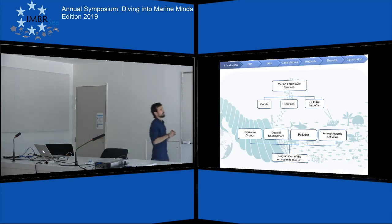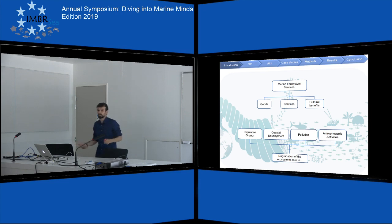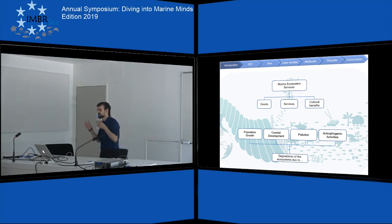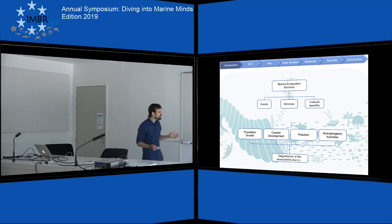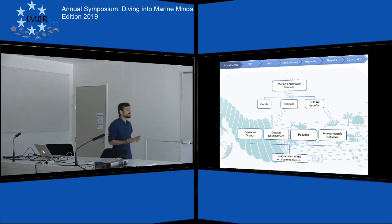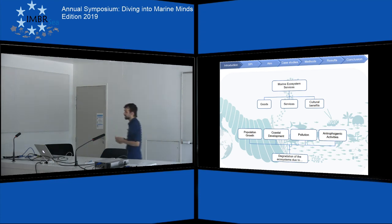First, a little introduction. Marine ecosystem services provide us goods such as raw material, genetic material, services, pollution control, and cultural benefits to assure marine ecosystem services to the next generations. However, population growth, the cost of development, pollution, and anthropogenic activities are degrading the marine ecosystem services that most countries depend on.